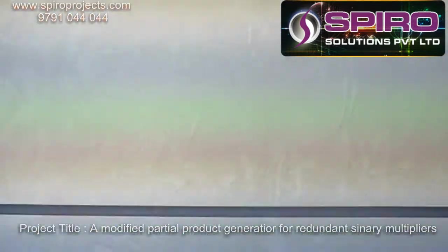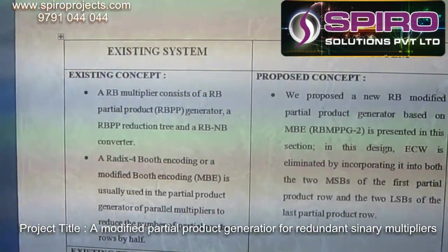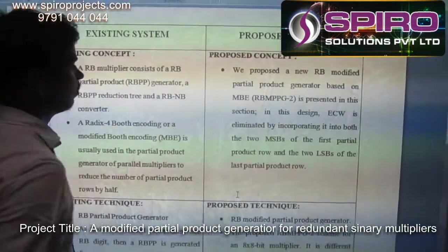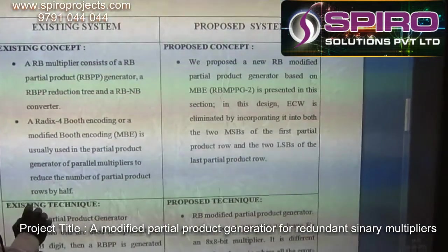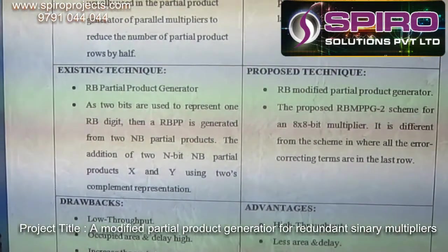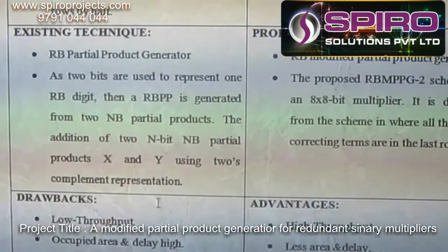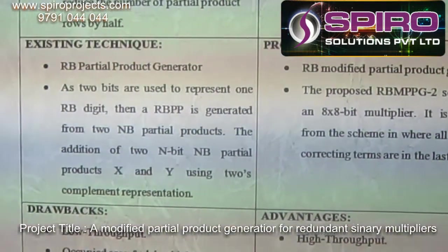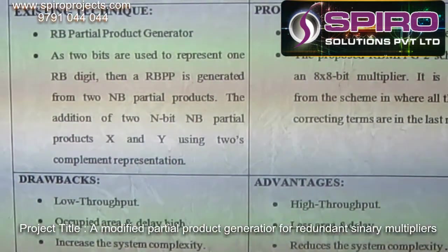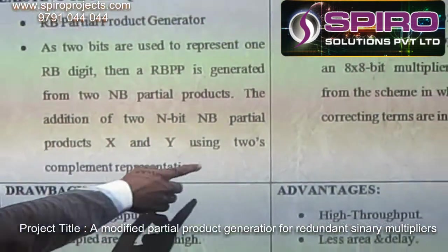In this multiplier, the existing system is redundant binary multipliers using Booth encoding methods. In this existing system, the partial product can be generated from a normal partial product. The addition of the two NP, or normal partial products, can be obtained by 2's complement.